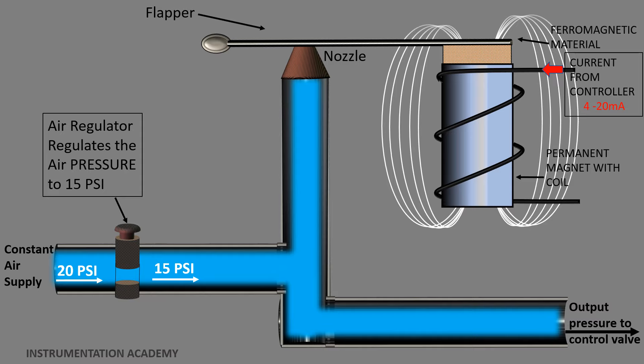Thus, the flapper will be pulled towards the nozzle, and when it moves downwards, the gap between the nozzle and the flapper gets reduced. Less gap means less air will pass through the nozzle end, and thus most of the air of the supply pressure will move out from the end opposite to that of the nozzle.